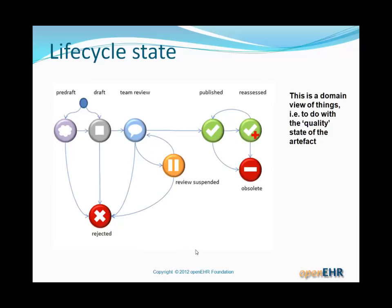However, from team review there may be a suspension of review for some reason. Also, from any of those early states the archetype might be rejected. If the archetype is published, it may be reassessed over time. An archetype that lasts a long time will probably be reassessed because everything changes in medicine. Eventually an archetype could become obsolete. This is a domain view — domain experts see this lifecycle as corresponding to the evolution of the archetype over its various phases of design and review. If it's published, that implies some level of usable quality.